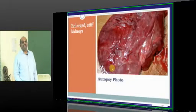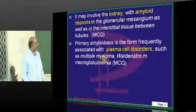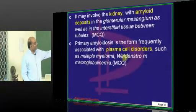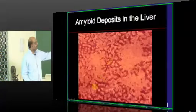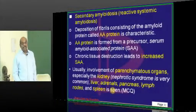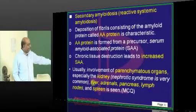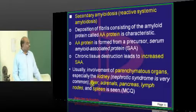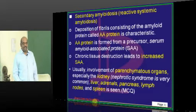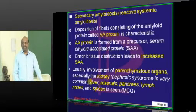So, primary involves heart, tongue, and muscle. For secondary, it involves kidney, liver, adrenal, pancreas, lymph nodes, and spleen. You don't need to remember all of secondary — automatically, if you remember the three primary organs, the remaining organs are all secondary.